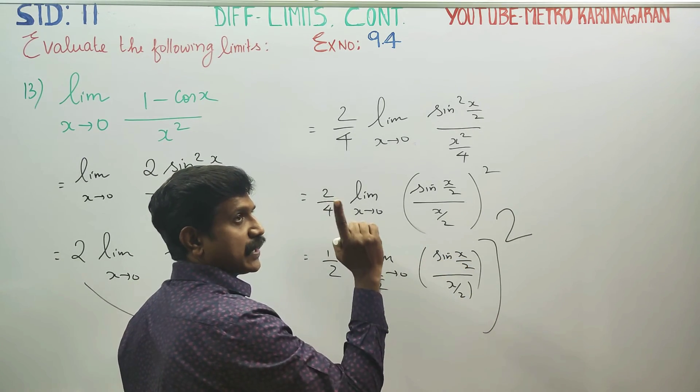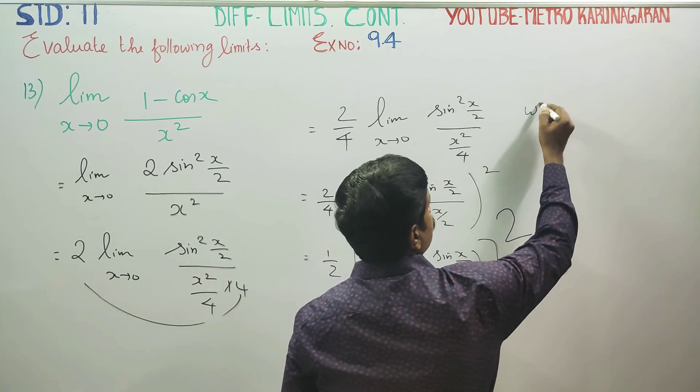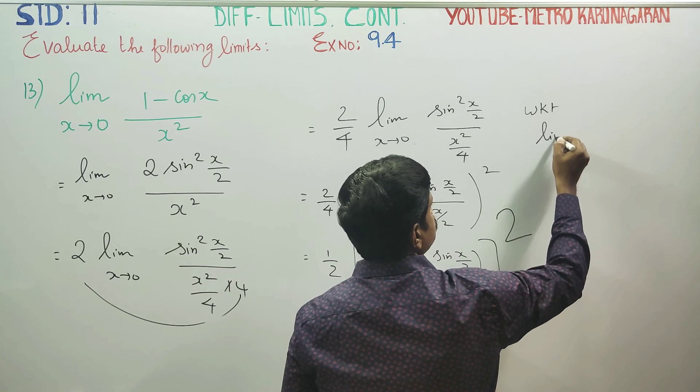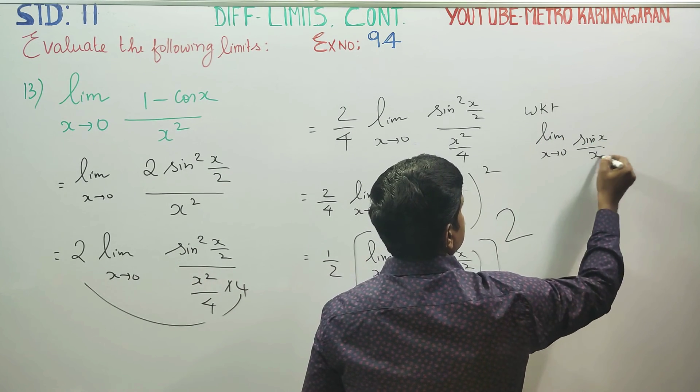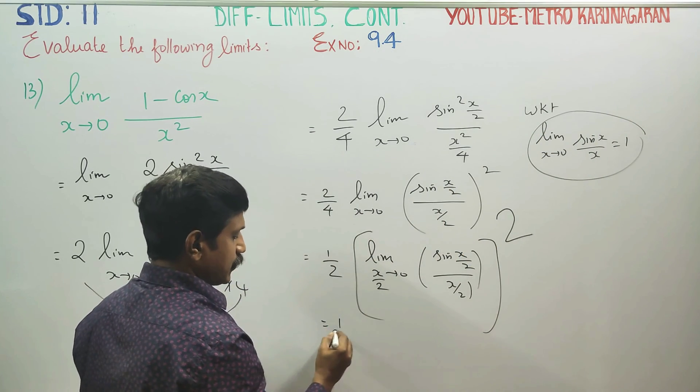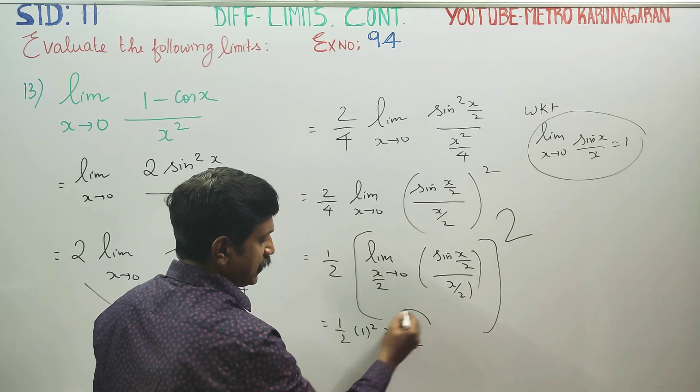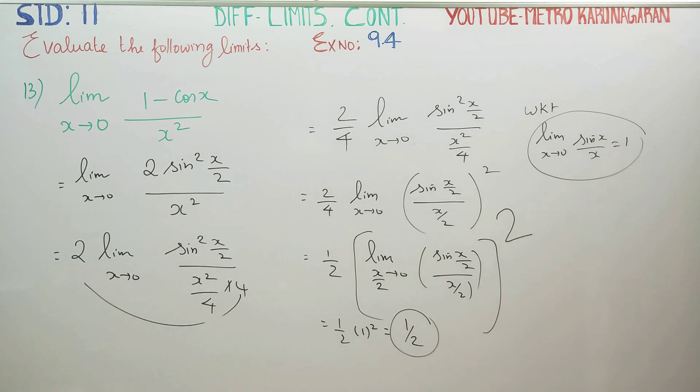Sin theta by theta is 1. So limit theta turns to 0, sin theta by theta, answer 1. We know that limit x turns to 0, sin x by x equals 1. Using this formula, 1 by 2 into 1 square, your answer will be 1 by 2. Thank you.